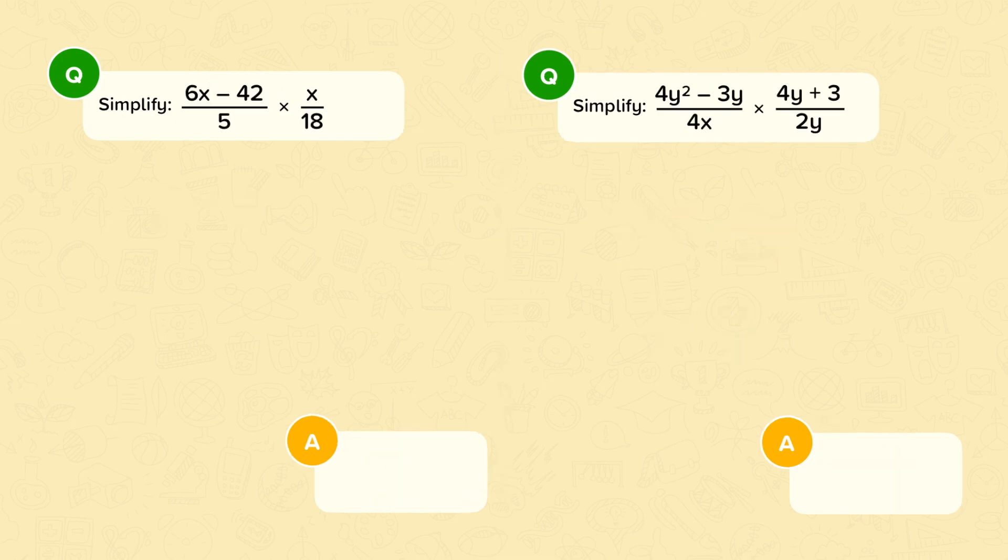Let's try some more questions. Simplify 6x minus 42 over 5 times x over 18. Now, the first step here is to factorise. I want to factorise this numerator.